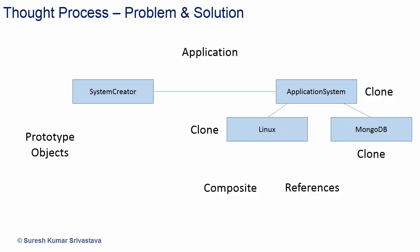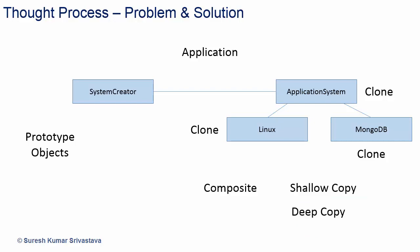But if a composite object has references, then after copying, multiple object references will point to the same memory. In that case, if the composite object has references, we will do a deep copy; otherwise we can have a shallow copy. Sometimes classes are known only at runtime for instantiation. System creator can receive the prototype object and invoke the clone method of application system, which is provided as an interface for subclasses, and inherited classes create a copy of self.